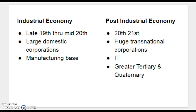I want to introduce the concept of an industrial economy. The Industrial Revolution took place in England and diffused across the world. An industrial economy — roughly from the late 19th through mid-20th century — features large domestic corporations and a strong manufacturing base. As things evolved, geographers and economists refer to the post-industrial era in the 20th and 21st century, characterized by huge transnational corporations, more IT, and more of that tertiary and quaternary sector of economic activity.